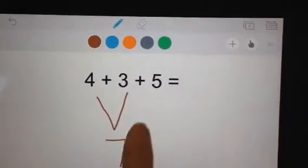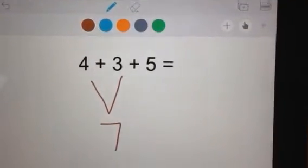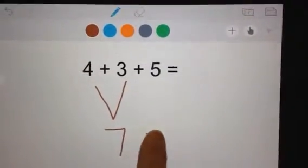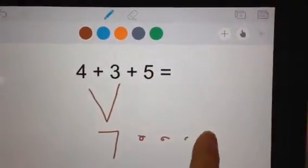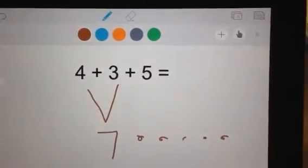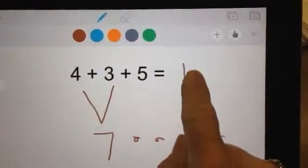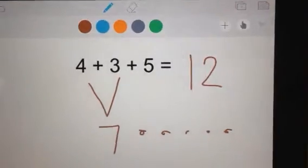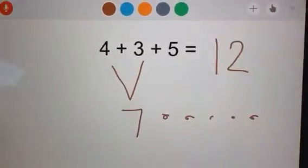7 and now I'm going to count on my last whole number 7, 8, 9, 10, 11, 12 and my answer is 12. So that's how you add three whole numbers.